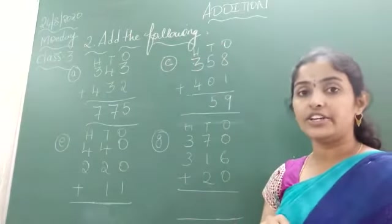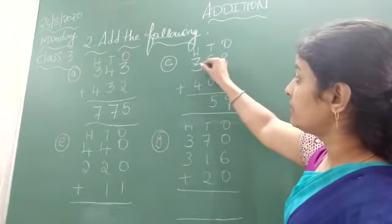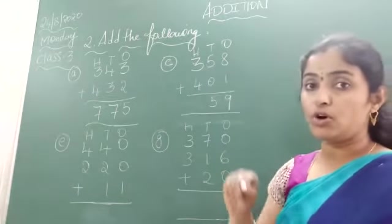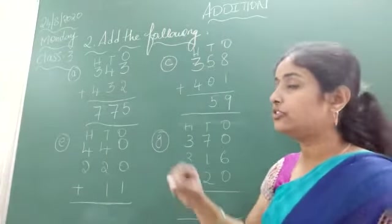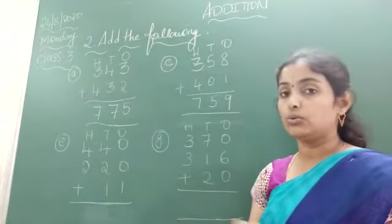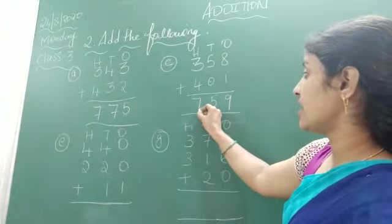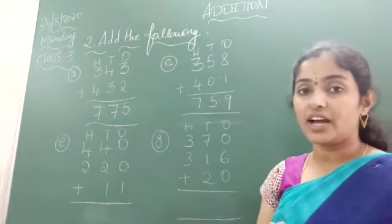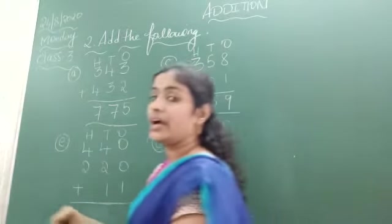Now next, add hundreds place. What you have here? 3 plus 4. How much you got the value? 3 plus 4 is 7. So tell me now, 759 is the required answer.